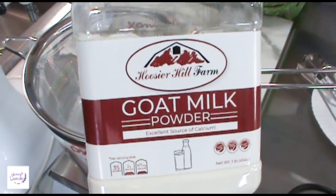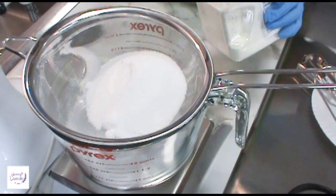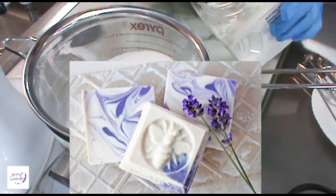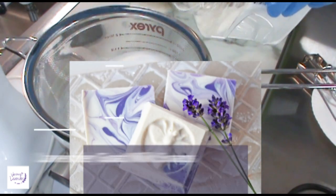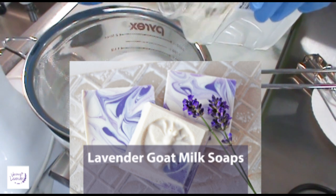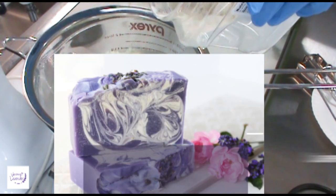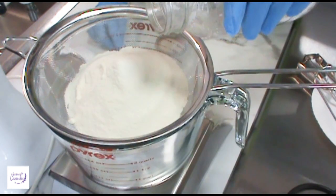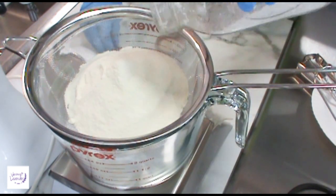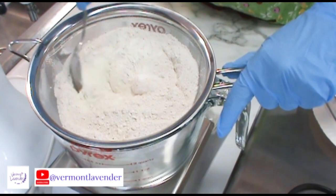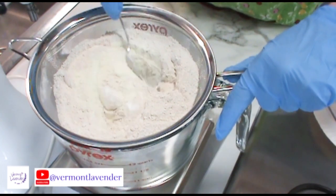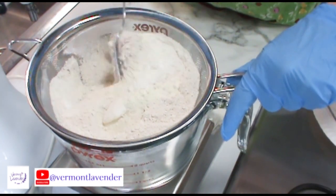I need four ounces of goat milk, and I love goat milk. I make goat milk soaps and they just come out so beautiful. They're so nice and moisturizing and gentle on your skin. Then I'm going to add four ounces of my kale and clay, and I'm just going to sift all of this so it's nice and well mixed.